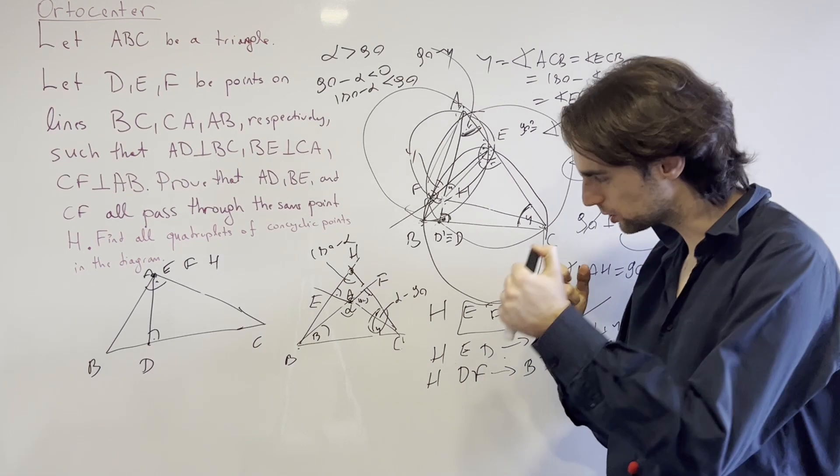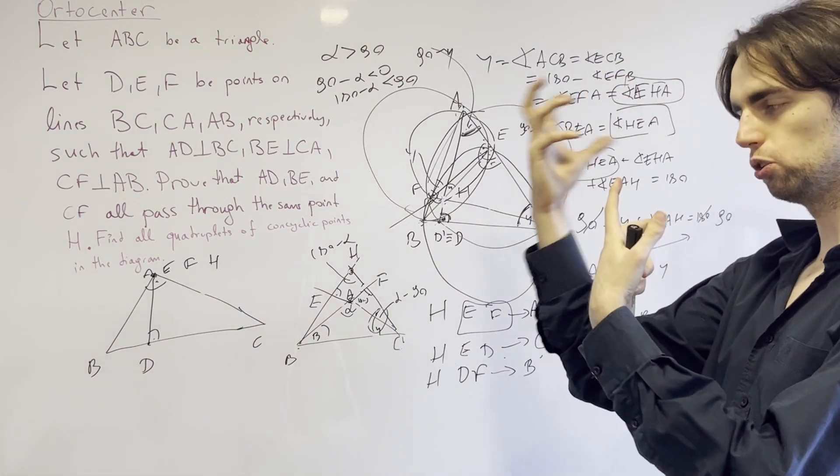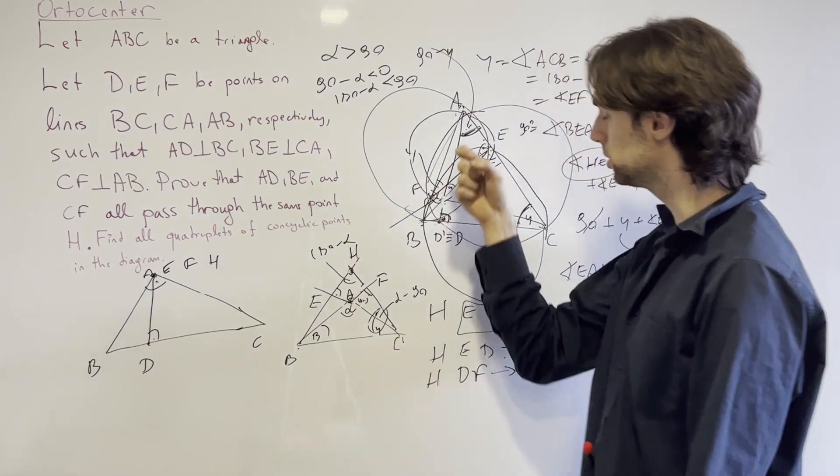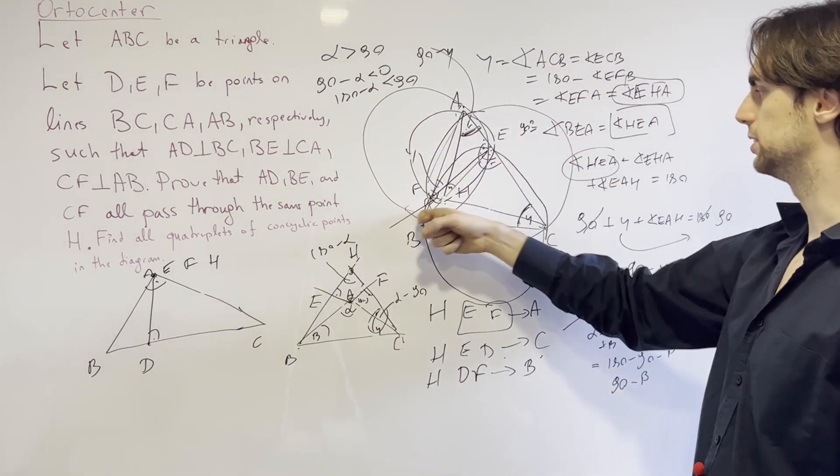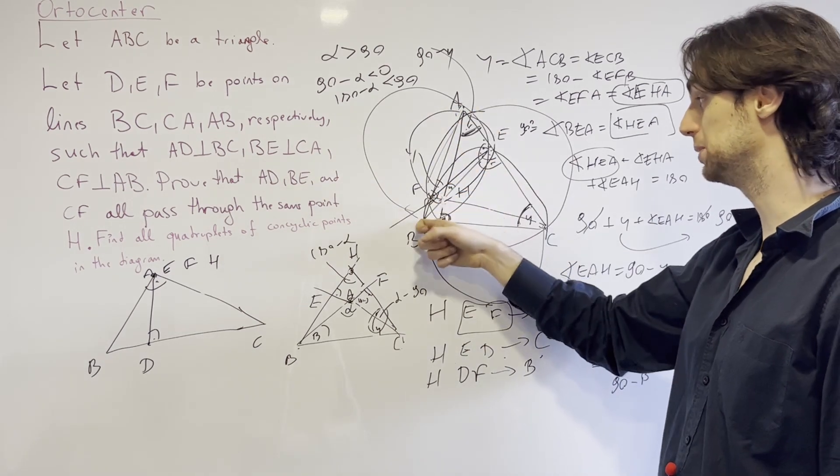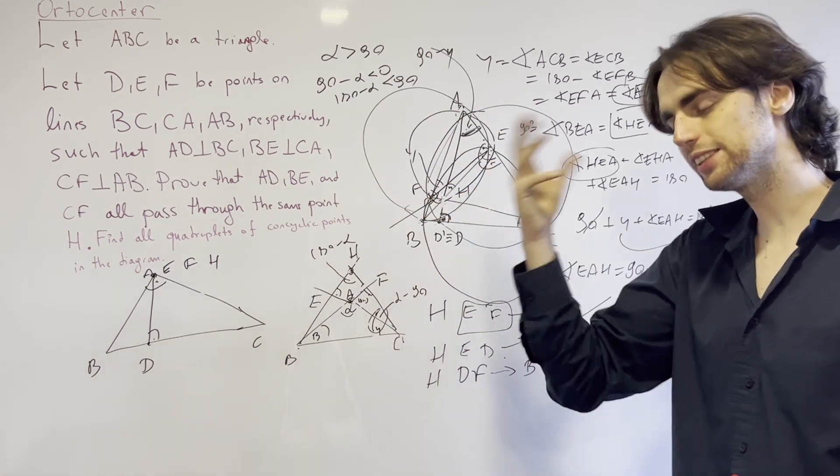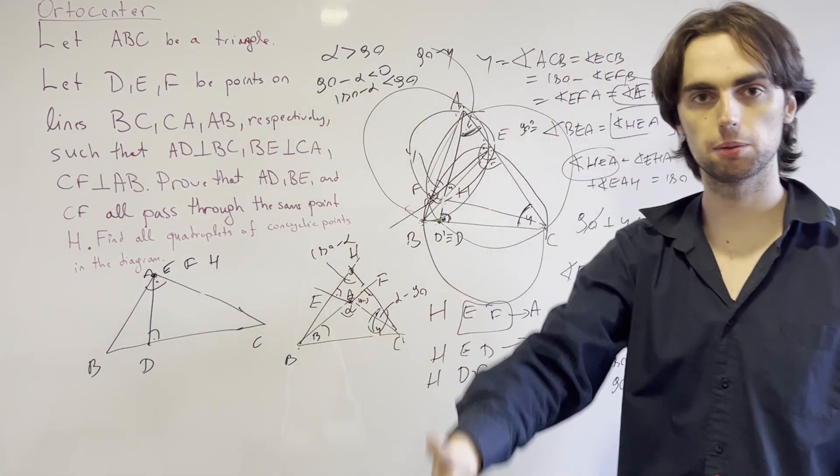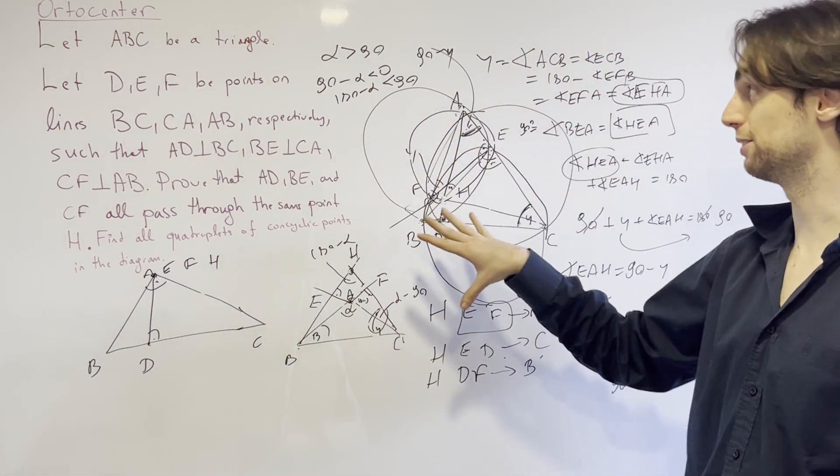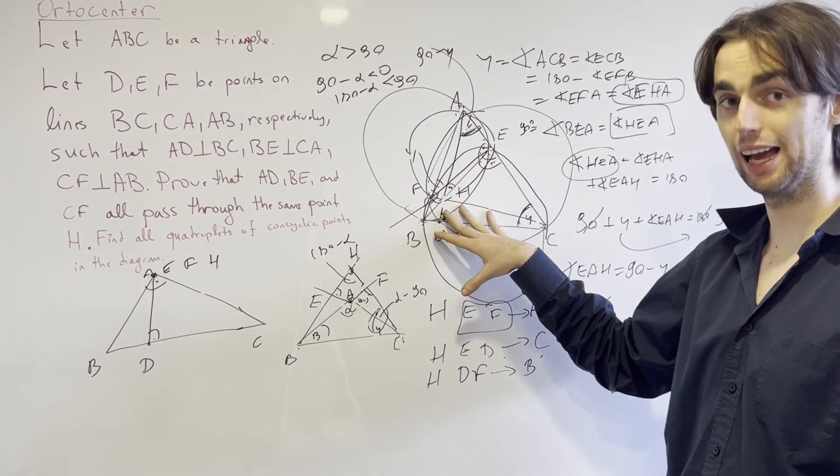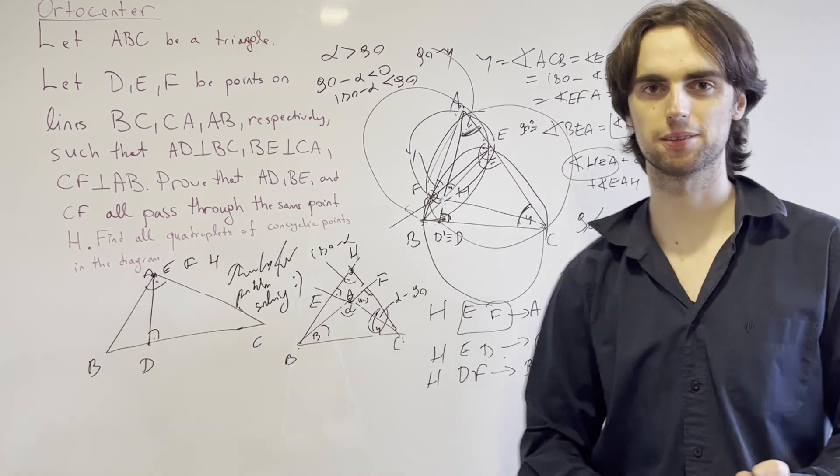Now, this also just gives you an important thing to note about the orthocenter. Is that the orthocenter of ABC, if that's H, then A is the orthocenter of HBC. And sometimes this change of perspective can help you with problems. Now, this finishes up all our talks about the orthocenter. And, as always, thanks for problem solving.